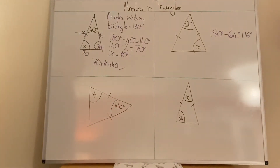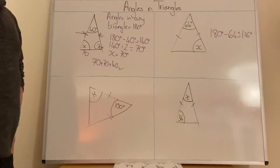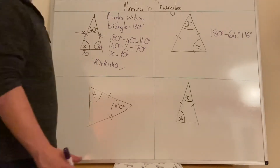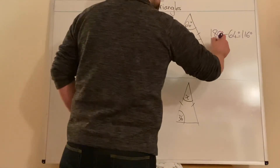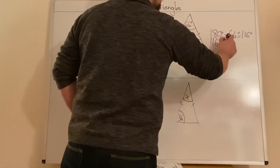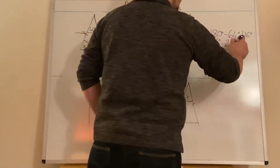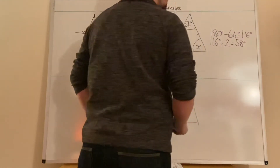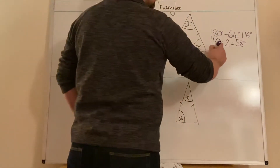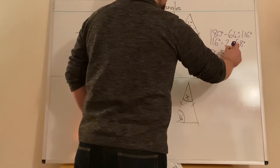180 minus 64 is 116 degrees. The next step is to halve whatever we've got. So we do 116 degrees divided by two, and that equals 58 degrees. So x equals 58 degrees.